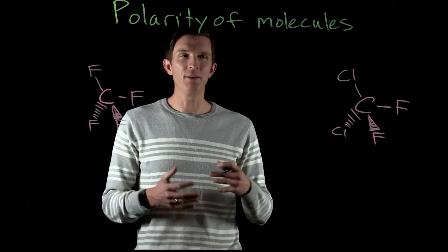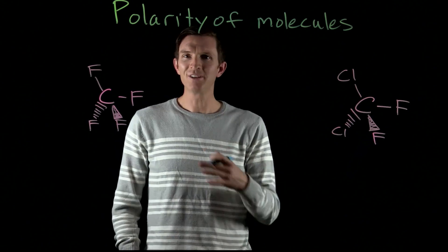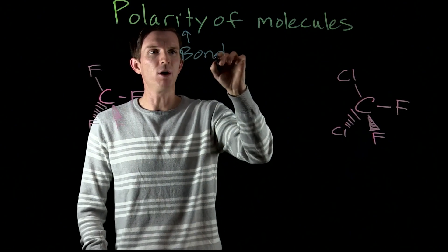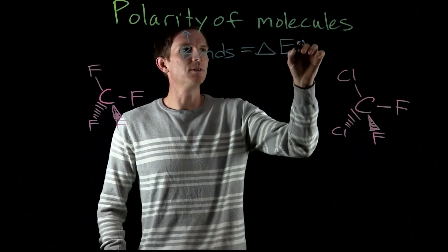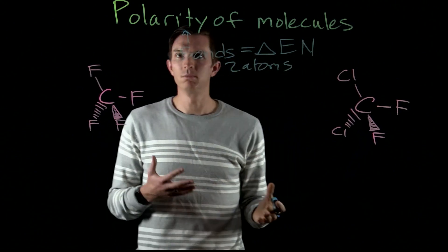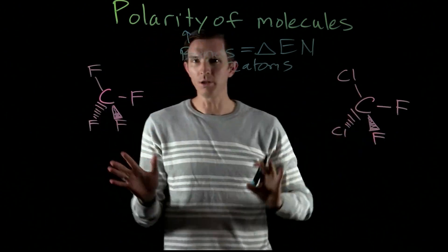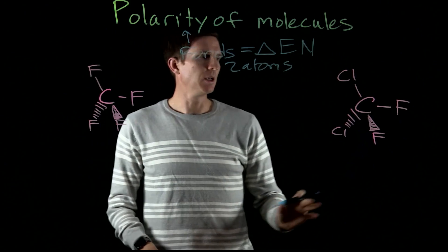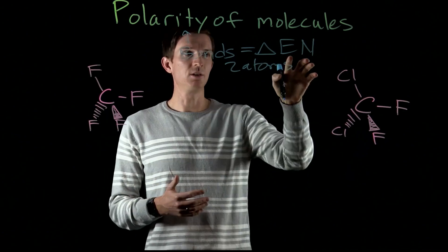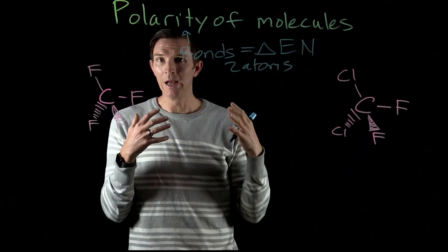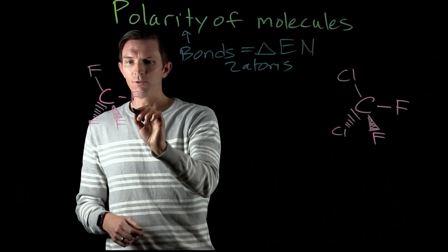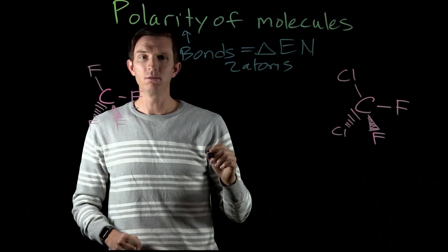Let's talk about polarity and how that relates to molecular polarity. We've previously talked about bond polarity — the difference in electronegativity between two atoms undergoing a bond. Here we have two different molecules: carbon tetrafluoride (CF4) and CCl2F2. Each of these bonds has some polar nature. Fluorine is more electronegative than carbon, meaning it pulls more strongly on electrons within the bond.